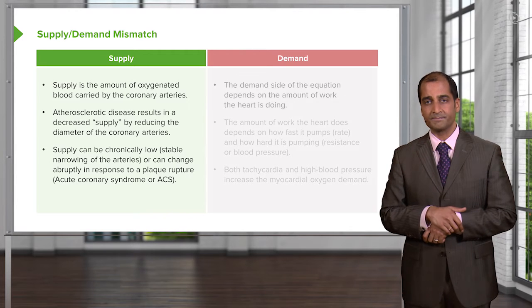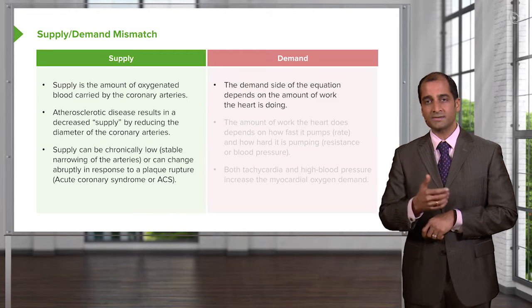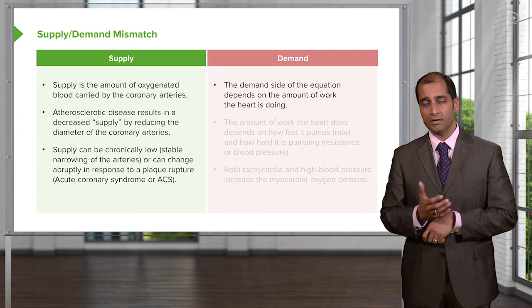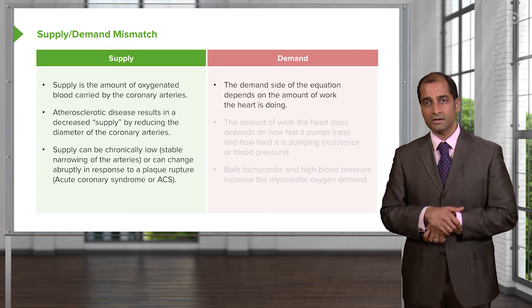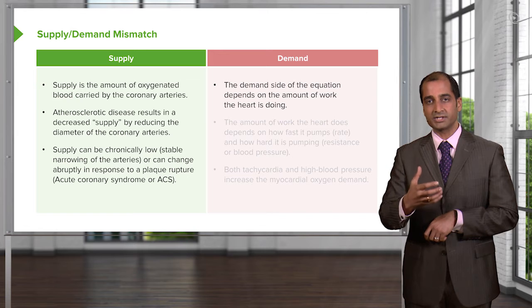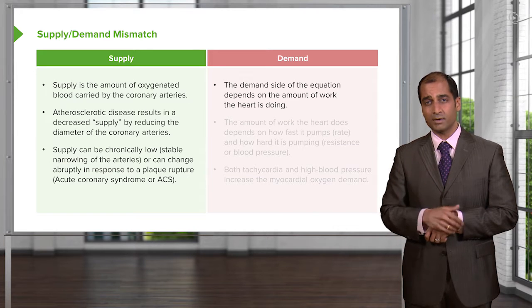What does demand mean? The demand side basically has two major things. Number one, the heart rate. The faster that the heart works, the more energy that it then requires in the form of ATP.